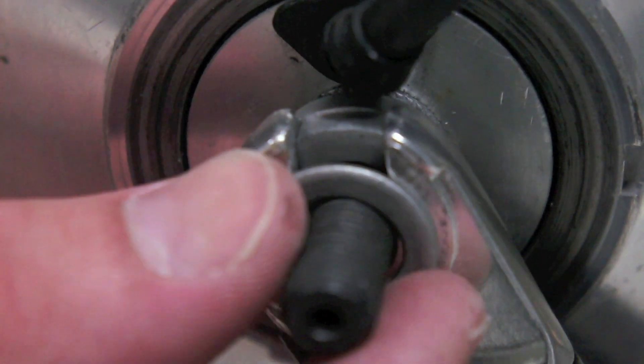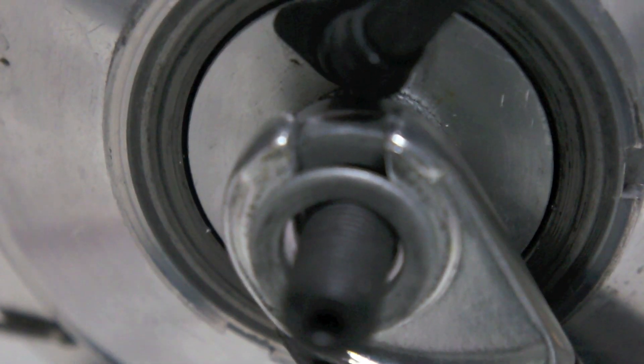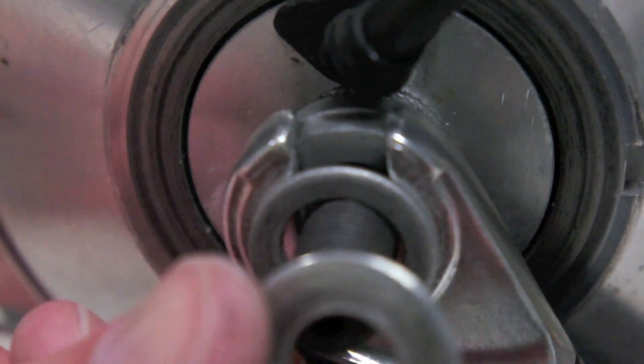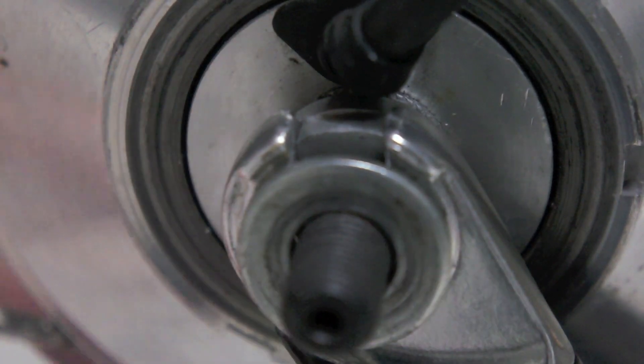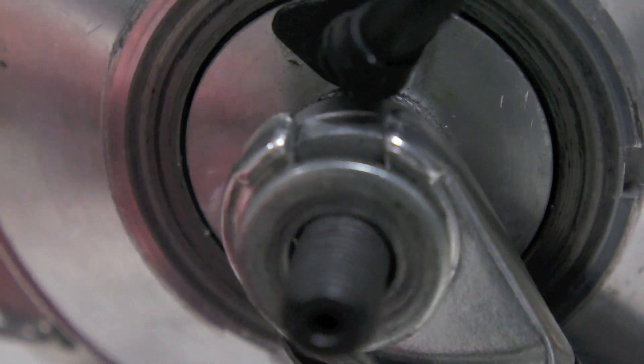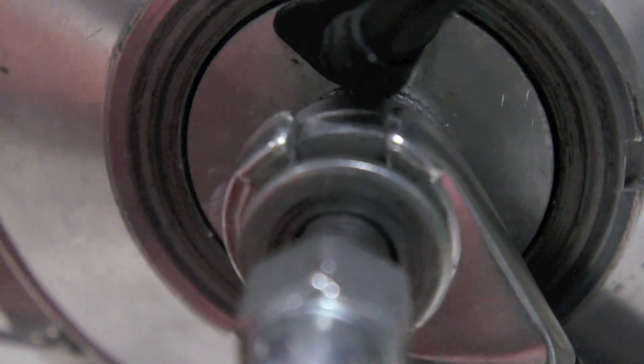Secondly, put the small washer on the axle, followed by the larger washer, and then the nut to hold the whole assembly in place.